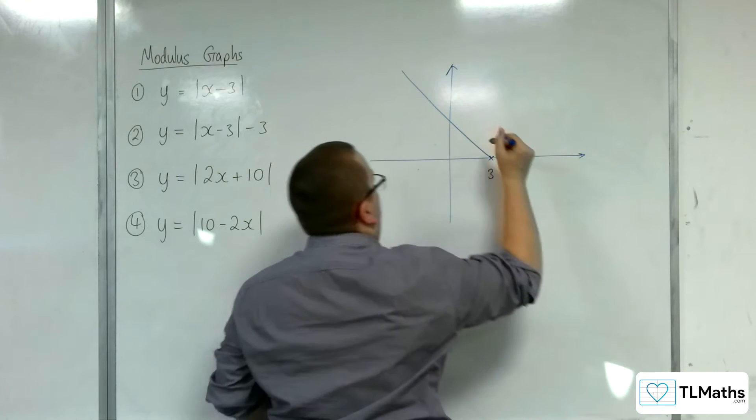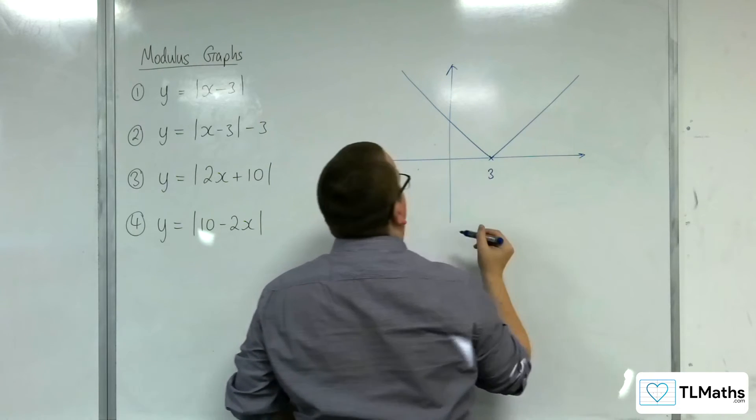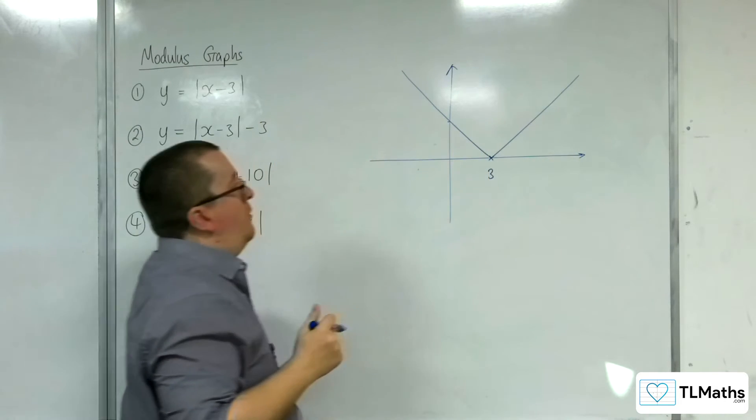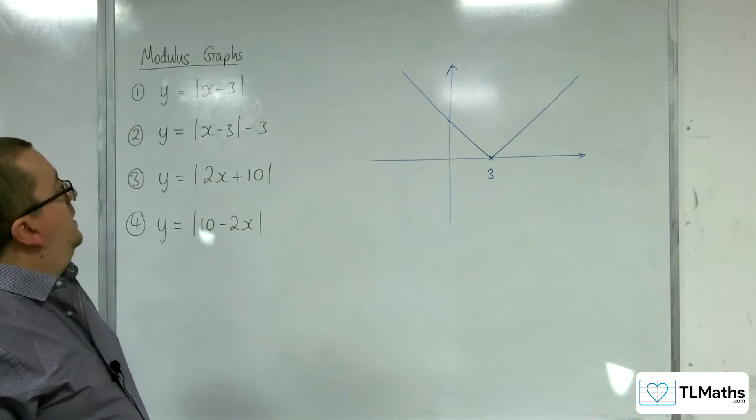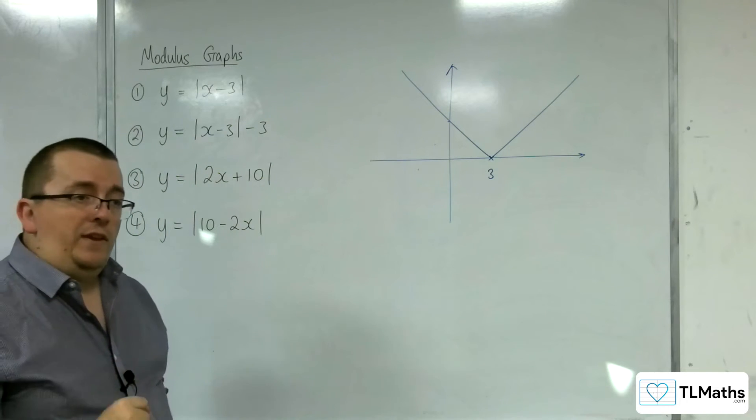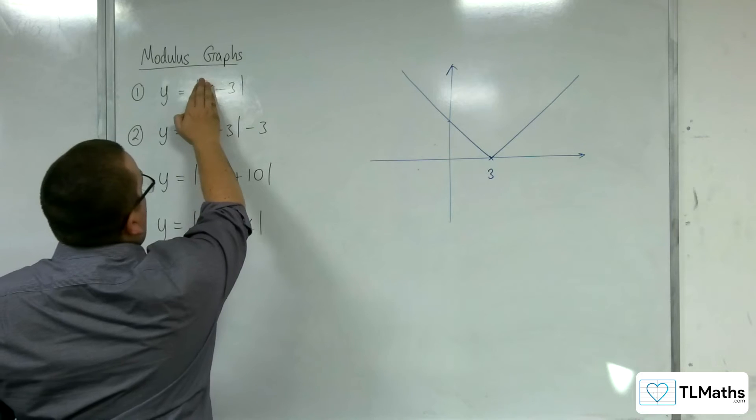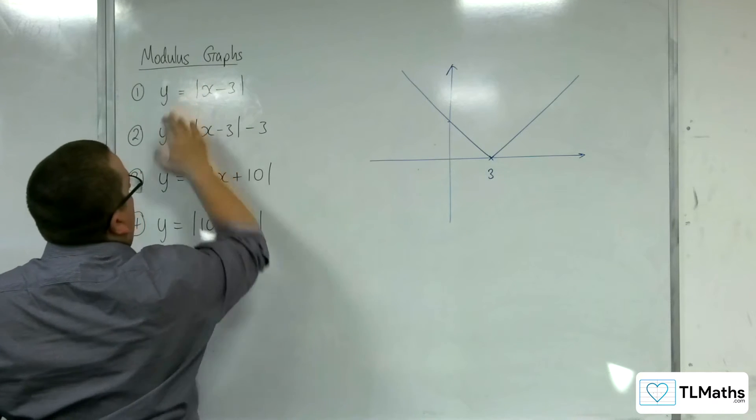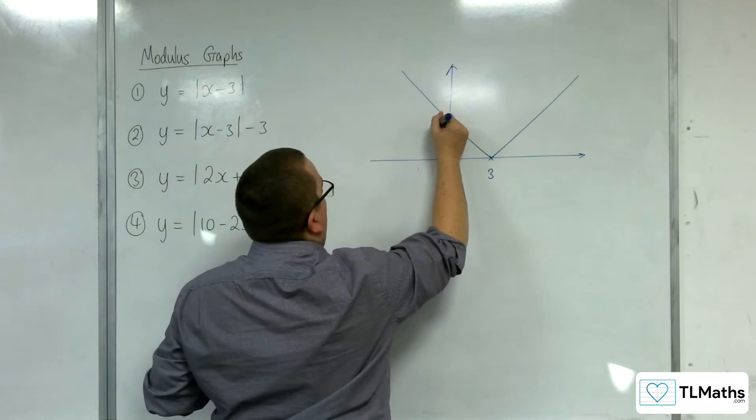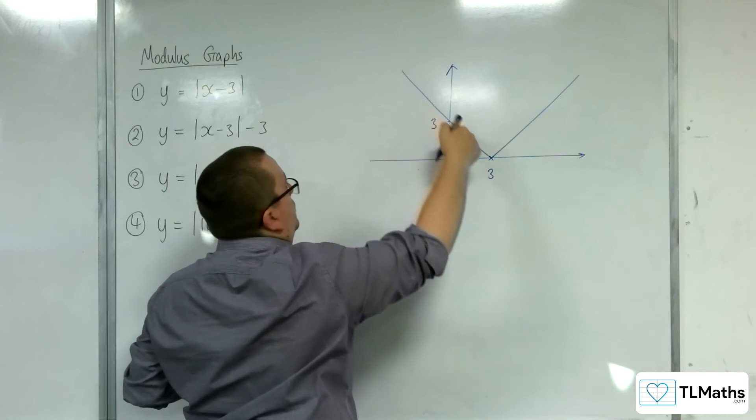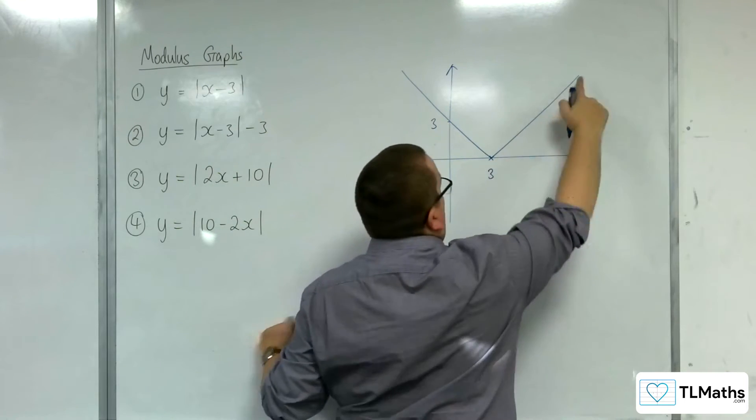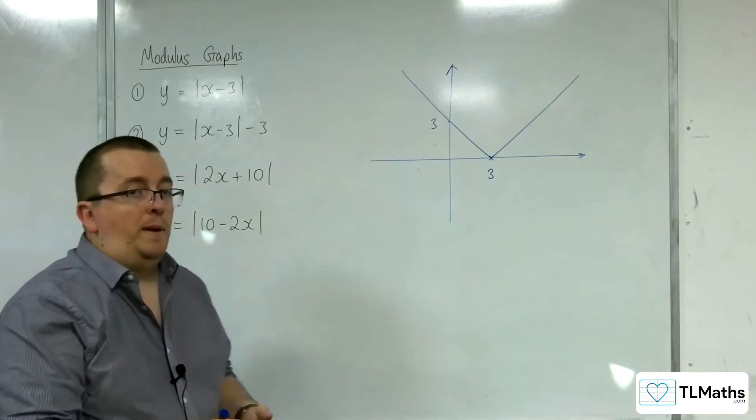So, here is the V shape, and what's left is to work out where it crosses the y-axis, which is going to be when x is 0. So when x is 0, you get the modulus of -3, which is 3. Which makes sense. This has gradient -1, this has gradient 1. And they are the two pieces of your graph.